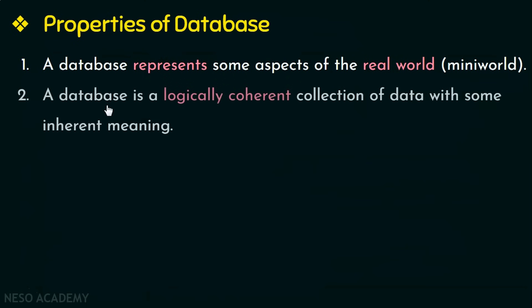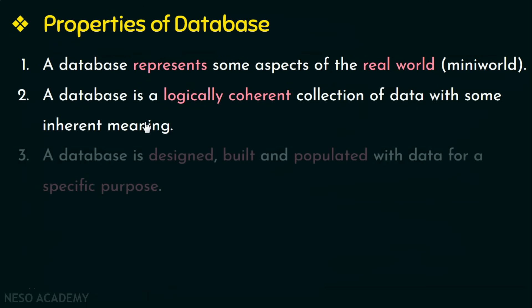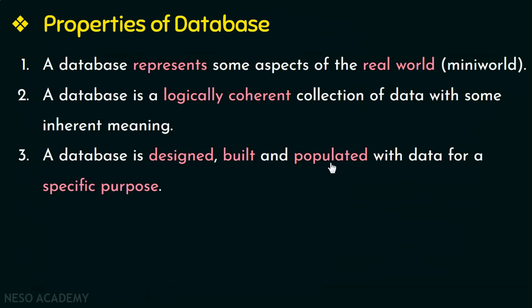The second property is that a database is a logically coherent collection of data with some inherent meaning. A random collection of data or unrelated data cannot be referred to as a database — the data has to be related or logically coherent. The third property is that a database is designed, built, and populated with data for a specific purpose. So these are the three main properties: a database represents the real world, it is a logically coherent collection of data, and it is designed and built for some purpose.